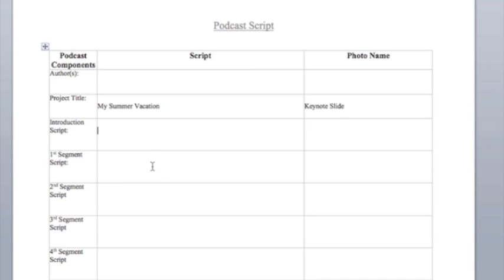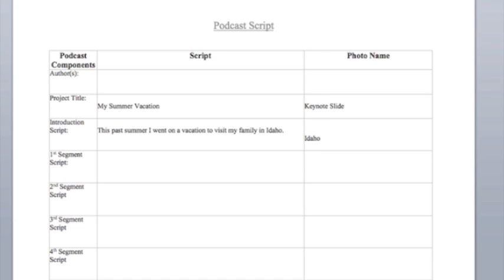The first thing you want to do, even before you come into GarageBand, is make a script. This is important so when you do record your voice you will have something to read. It'll save you time and it won't take you as many tries to say it the right way. So definitely make a script before you begin your work here in GarageBand.